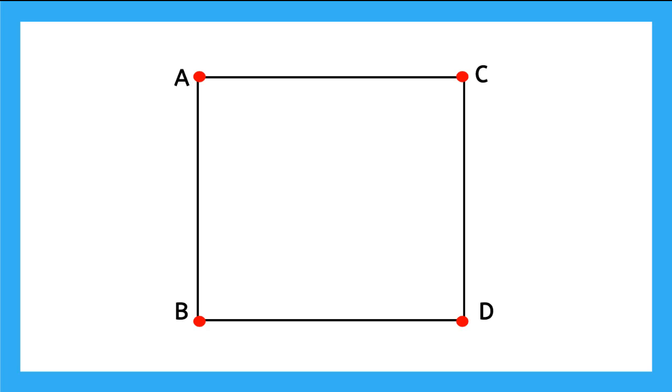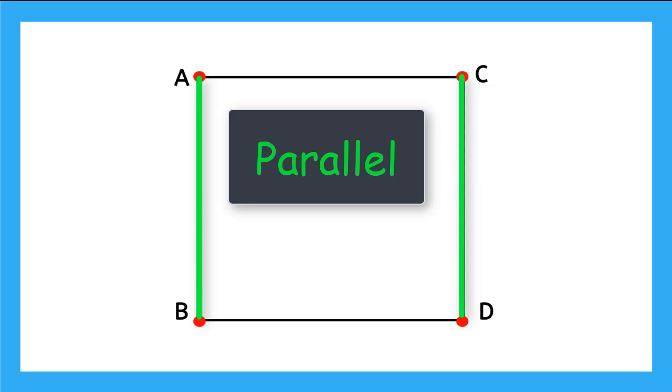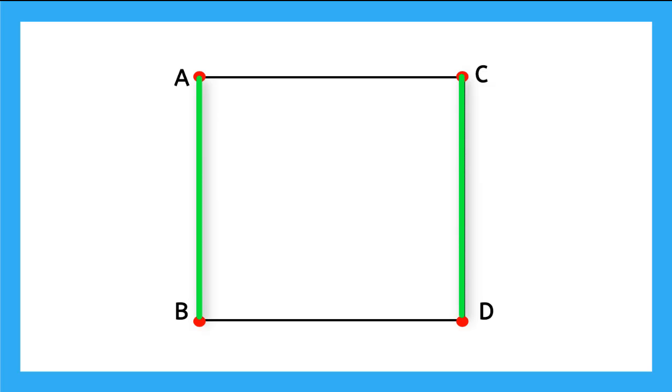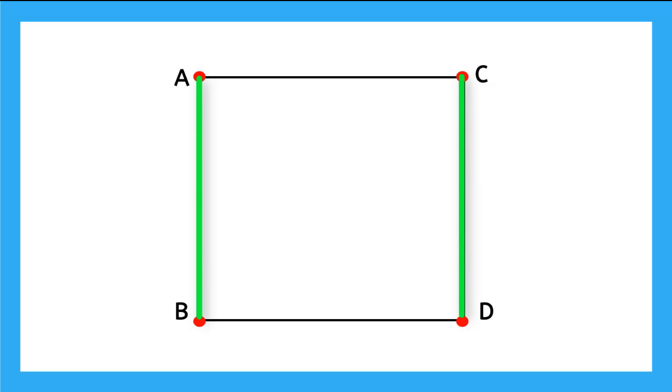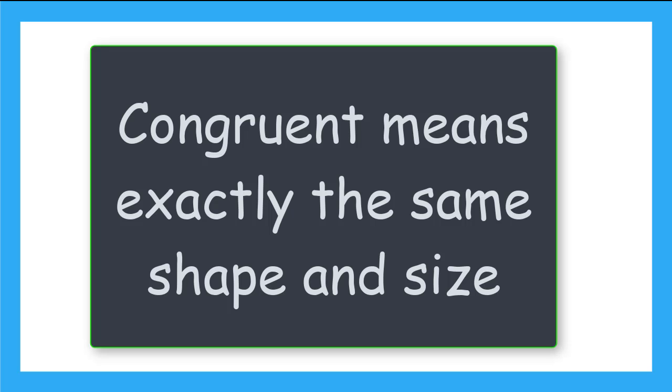When you look at this square, what do you notice about line segments AB and CD? Well, there are two things. One, they are parallel line segments. They are equidistant apart and will never cross each other. And two, since you know this is a square, that means that my side lengths are the exact same. That means that line segments AB and CD are congruent. Congruent is a very important word in geometry. It means two things that are exactly the same shape and size.